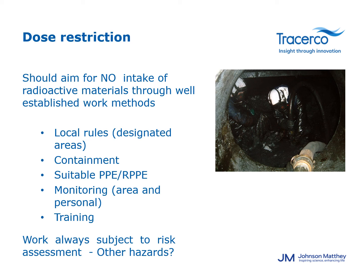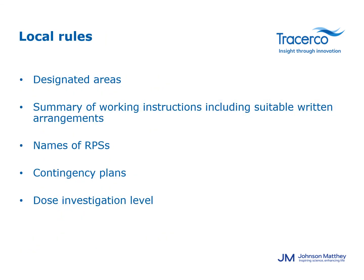Site local rules must include details of any designated controlled or supervised areas — that is, areas considered to pose the biggest risk. They must include a summary of working instructions including suitable written arrangements for entry into controlled areas, contingency plans in the event of an accident or an incident involving NORM, and a dose investigation level which, if exceeded, must prompt an investigation of how this occurred and what steps may be taken to prevent it from happening again.